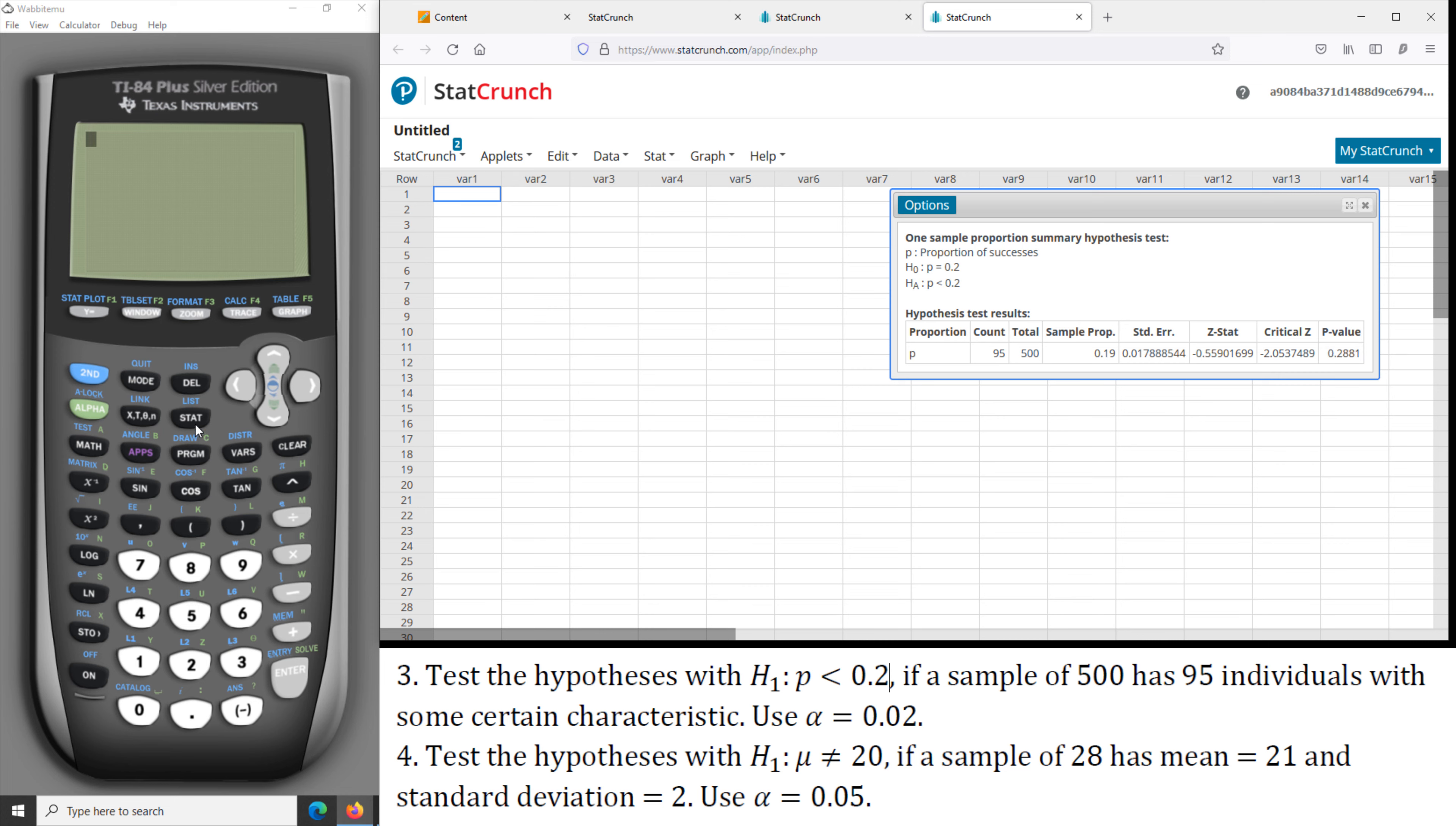Now if we use the TI-84 calculator, go to Stat, go to Test, and we'll look for the test. These are the tests for the population proportion, so we choose this option.